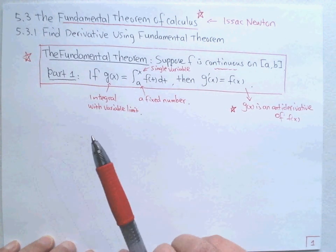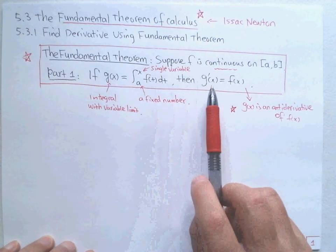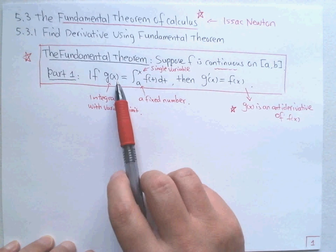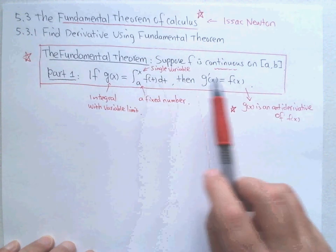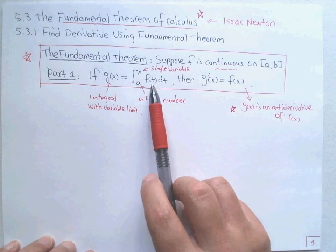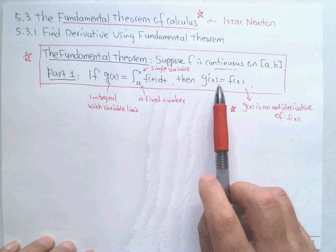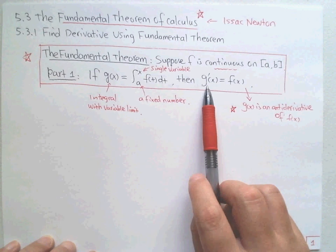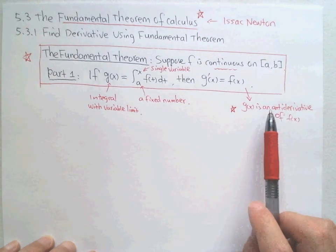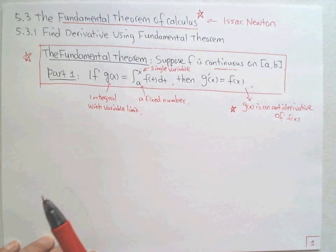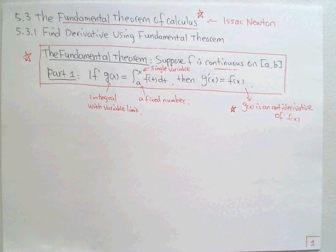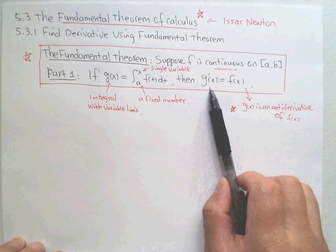Once we define this function, we say it is continuous. We can even find the derivative of this function, and the derivative of g(x) is exactly the integrand function f(x). If g takes the derivative equal to f, we call g an antiderivative of f(x). This is one antiderivative. This is the most important result.